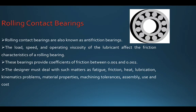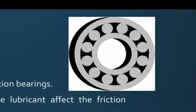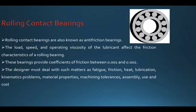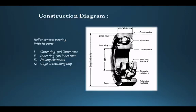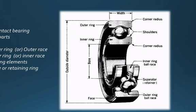When designing a rolling contact bearing, factors to consider include fatigue, friction, heat, lubrication type, kinematic issues, material properties, machining tolerance, and assembly. The bearing has an inner ring — the bore — which is fixed to the shaft and rotates with it, and an outer ring which is fixed. The balls or rollers allow relative movement between the inner ring and the outer ring.